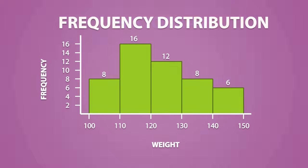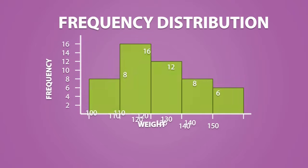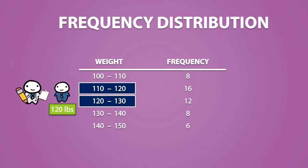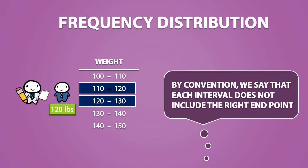A histogram is a form of a frequency distribution. Frequency distributions can be written in a table format and they tell us how many data values fall within a certain interval. These intervals can be a little confusing. For example, if I recorded an individual's weight to be exactly 120 pounds, do I include them in this interval or this interval? By convention, we say that each interval does not include the right endpoint. So 120 is not included in this interval, and 130 is not included in the other interval. So in fact, 120 belongs to the second interval.